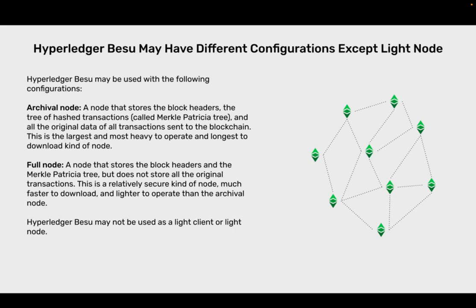Hyperledger Bezu may have different configurations, except light node. It may be used with the following configurations: archival node — a node that stores the block headers, the tree of hash transactions called the Merkle Patricia tree, and all the original data of all transactions sent to the blockchain; this is the largest and most heavy to operate and longest to download kind of node. Full node — a node that stores the block headers and the Merkle Patricia tree but does not store all the original transactions; this is a relatively secure kind of node, much faster to download and lighter to operate than the archival node. Hyperledger Bezu may not be used as a light client or light node.